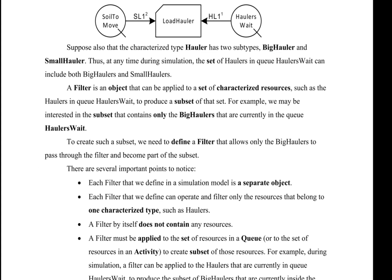A filter is an object that can be applied to a set of characterized resources, such as the haulers in queue hauler's weight, to produce a subset of that set. For example, we may be interested in the subset that contains only the big haulers that are currently in the queue hauler's weight. To create such a subset, we need to define a filter that allows only the big haulers to pass through the filter and become a part of the subset.